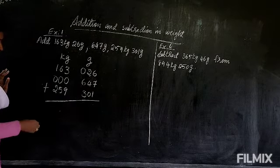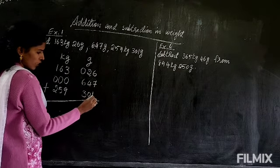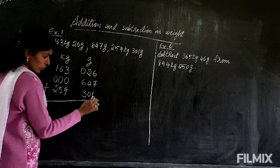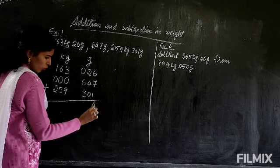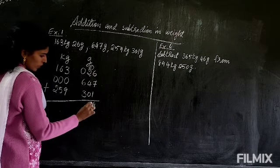Now we have to add. First, you have to add the lower unit, that is the gram. So 6 plus 7, 13. 13 plus 1, 14. So 4 you will write, 1 you will carry here. 2 plus 1, 3. 3 plus 4, 7.